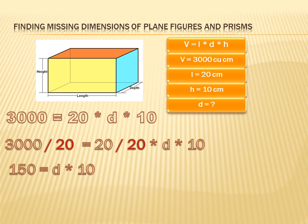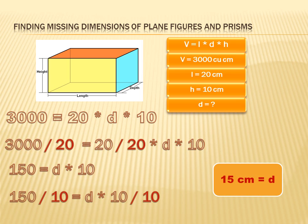Now, we need to get rid of the 10. So we're going to divide both sides of the equation by 10. And when we do that, the 10s on the right are going to cancel each other out. So we've got D equals 150 divided by 10. And 150 divided by 10 is 15 centimeters.